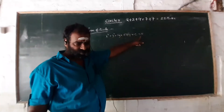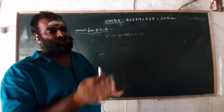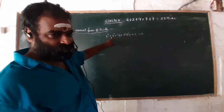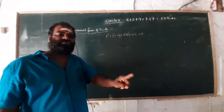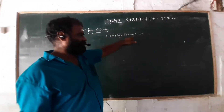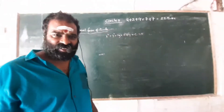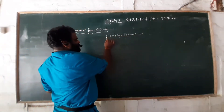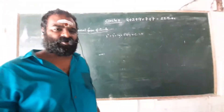The general form of a circle is x² + y² + 2gx + 2fy + c = 0. In this equation, the coefficient of x² is 1 and the coefficient of y² is 1, so a = b — the first condition is satisfied. There is no xy term, so h = 0. And g² + f² - c ≥ 0 must hold. Therefore, x² + y² + 2gx + 2fy + c = 0 is the general form of a circle.